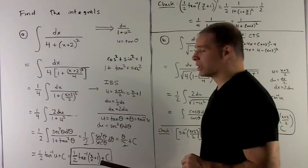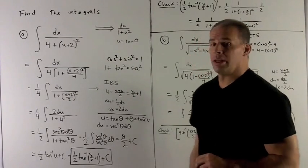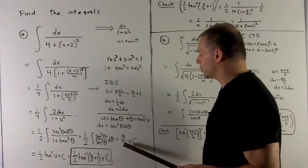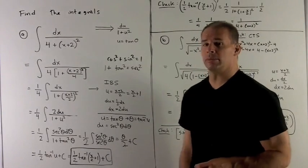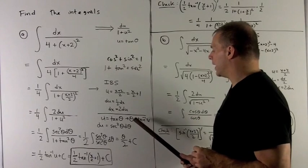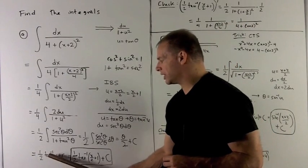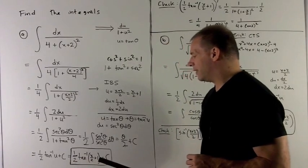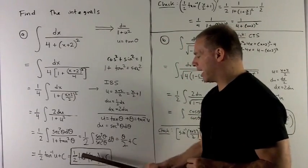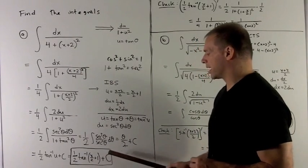The secant squareds go away. And we're just left with integral of d theta. That's just going to be theta. And we pick up the 2. So I get theta over 2 plus a constant. Now we just have to unwind things. We'll note here theta is equal to inverse tangent of u. So we have 1 half inverse tan u plus a constant. And then we get rid of the u that was over here. We have 1 half tan inverse of x over 2 plus 1 plus a constant.